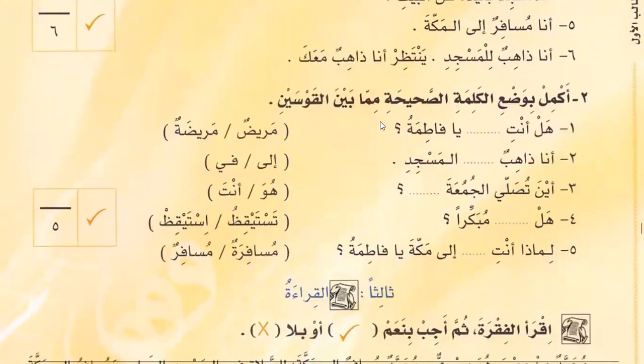Aakmil biwadil kalimatis sahiya mimma bain al kawseh — complete by putting the correct word from what is between the two brackets. Al anti marida — are you sick? Fatima is female, so we need marida here. Ana zahibun illal masjid. Aina tusallil jumwa anta — tusalli second person, so we use anta. Then read the paragraph and put the check mark or cross mark.